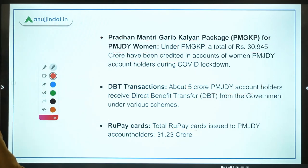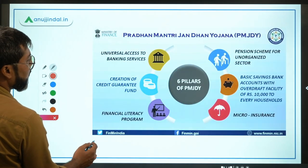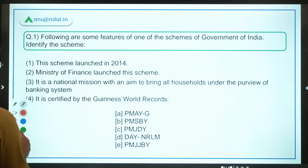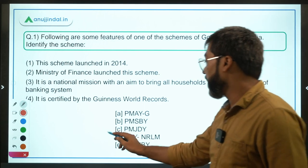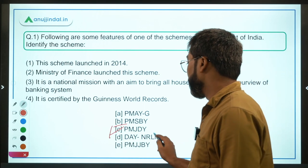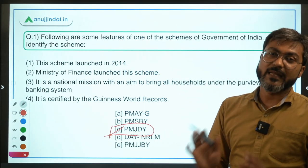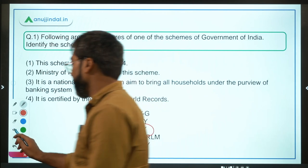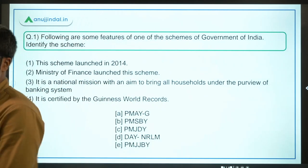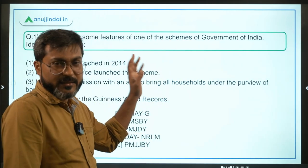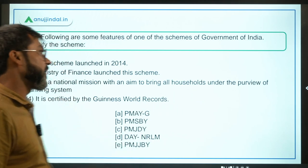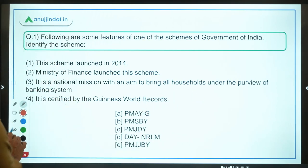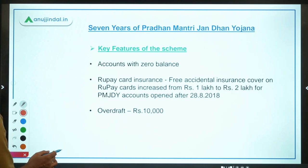The correct answer to question one is Pradhan Mantri Jan Dhan Yojana — option C. You now have comprehensive coverage of this scheme and should be well-prepared for any related exam questions.